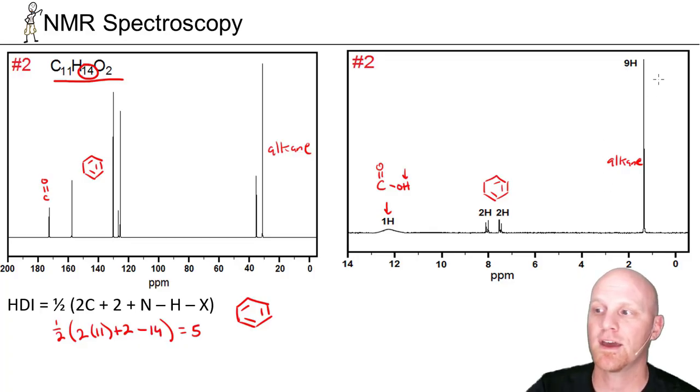So in this 1 to 2 to 2 to 9 ratio, I'm going to deal with the alkane region first again. In this case, I like looking for methyl groups first, but in this case, we only have one signal in the alkane region, and it represents 9 H's, which just happens to be a multiple of 3. And so the question is, how do we get 9 equivalent H's?